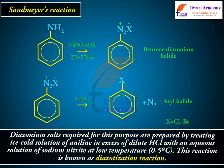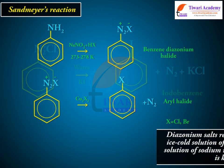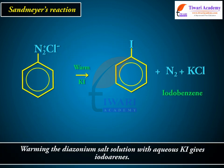The product is benzene diazonium halide converted to aryl halide, where X is equal to Cl or Br. Warming the diazonium salt solution with aqueous KI gives iodoarenes.